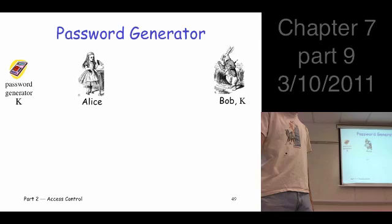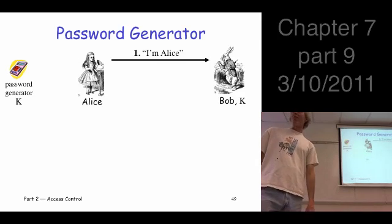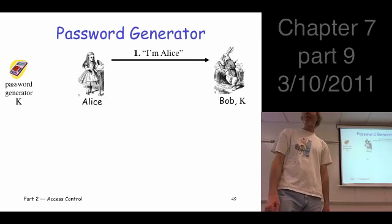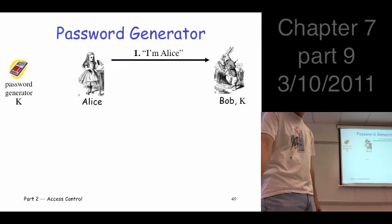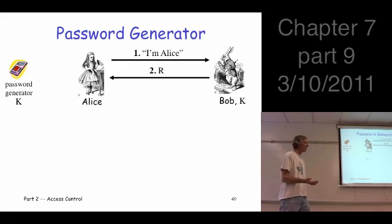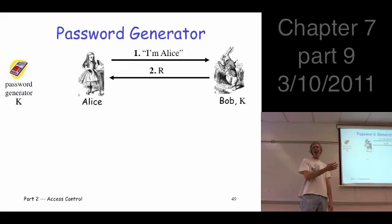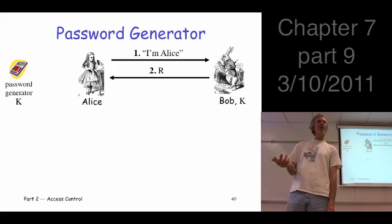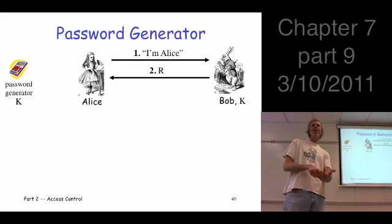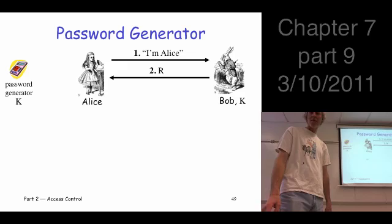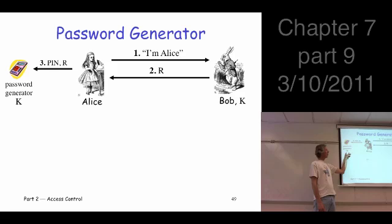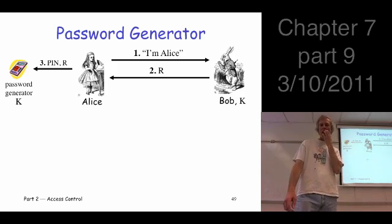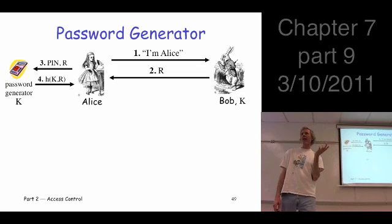She carries with her this password generator — think of it as a little pocket calculator kind of thing and she can punch numbers into it. It has stored in it some key K, which Bob the server also knows. So here's the protocol: Alice is going to say, 'I'm Alice.' Bob is going to say, 'Prove it,' and he's gonna send a random challenge R to Alice. The challenge for Alice is to type this number into her password generator. She has to enter her PIN along with the random number to open the device, then enter R into the password generator. The password generator uses the key K along with that random number and hashes those two together to produce a number.